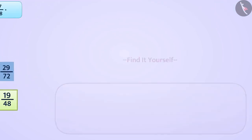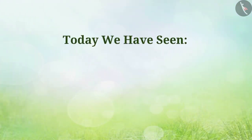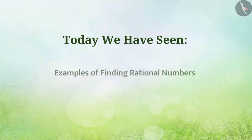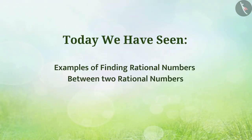Now find yourself the 3 rational numbers between 14 by 5 and 9 by 11. Today we have seen examples of finding rational numbers between 2 rational numbers.